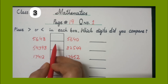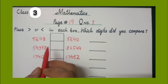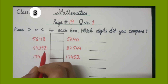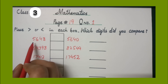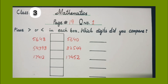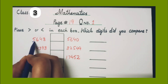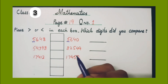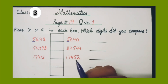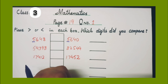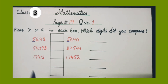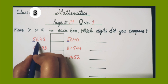Now we will learn how to compare. First, what do we have to compare? We have to compare the thousands place. Do you remember the rule of comparison — what we compare first? Thousand value first. Here we have the thousands values in both numbers — are they the same? Yes, they are both the same.